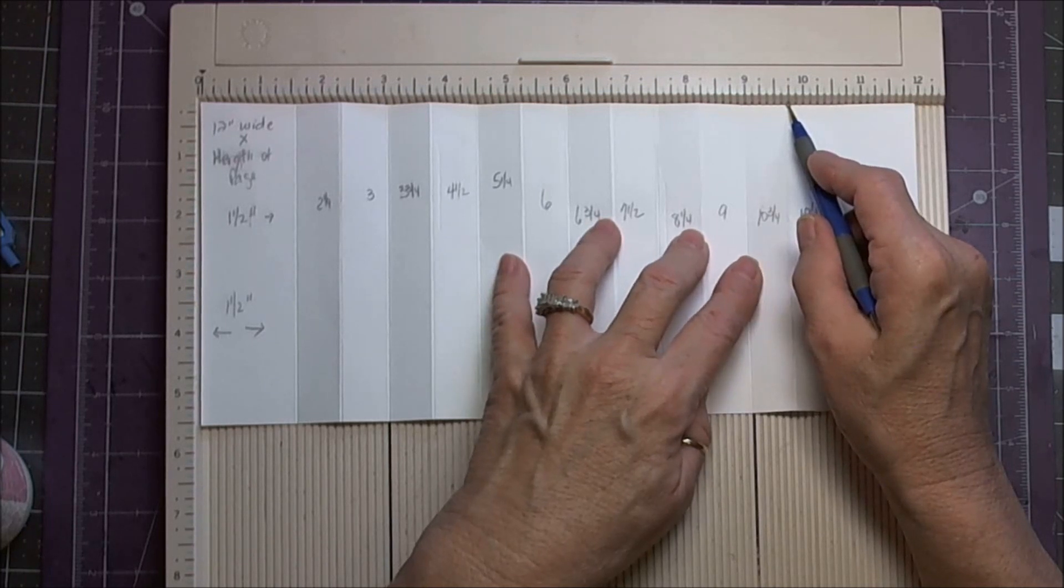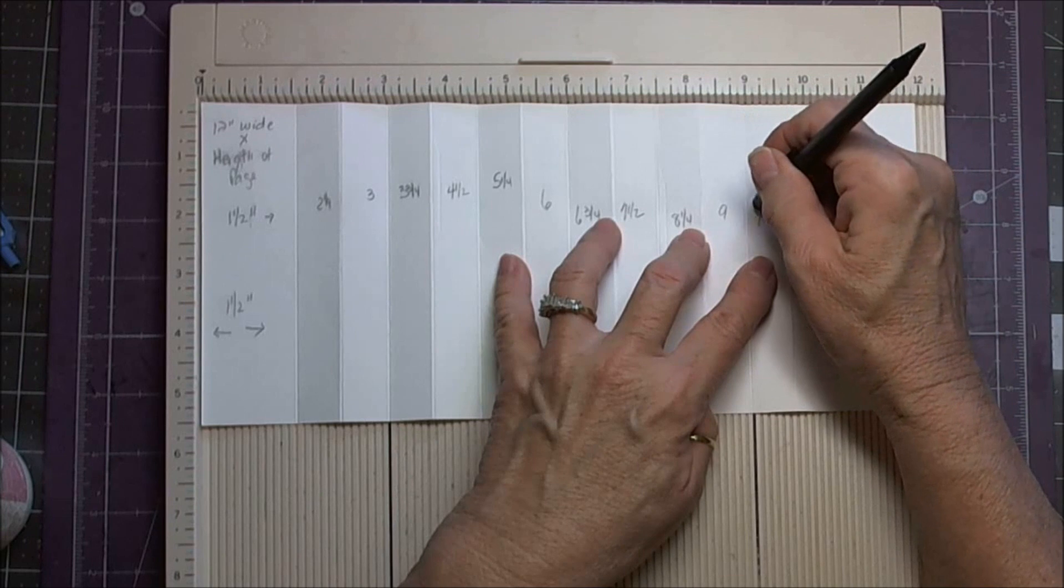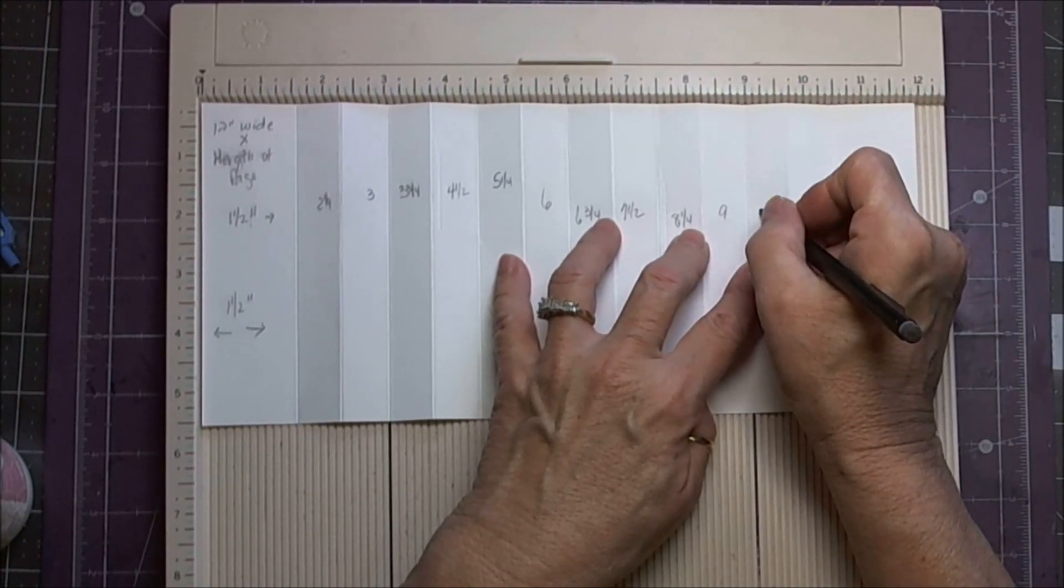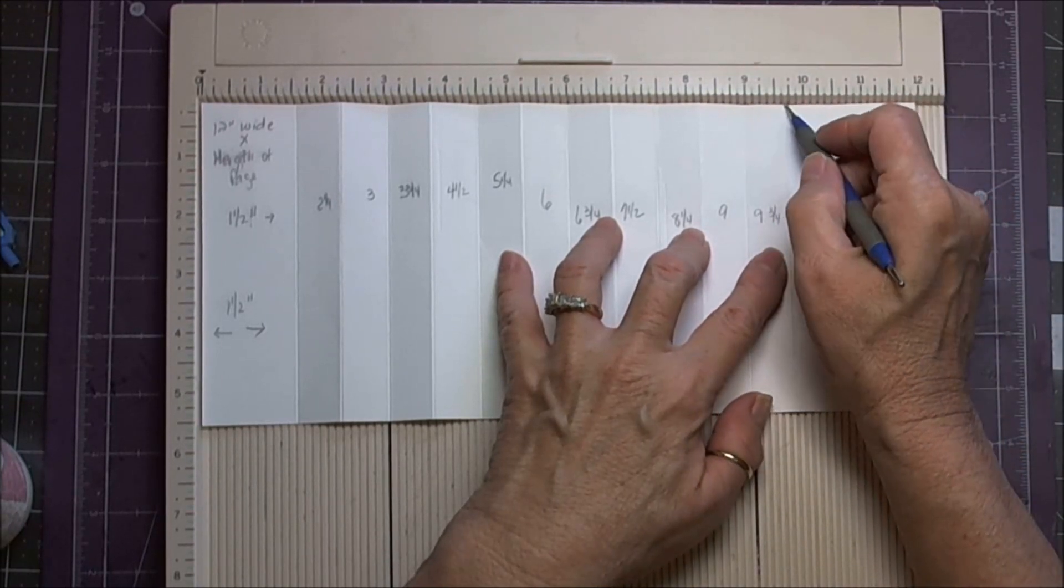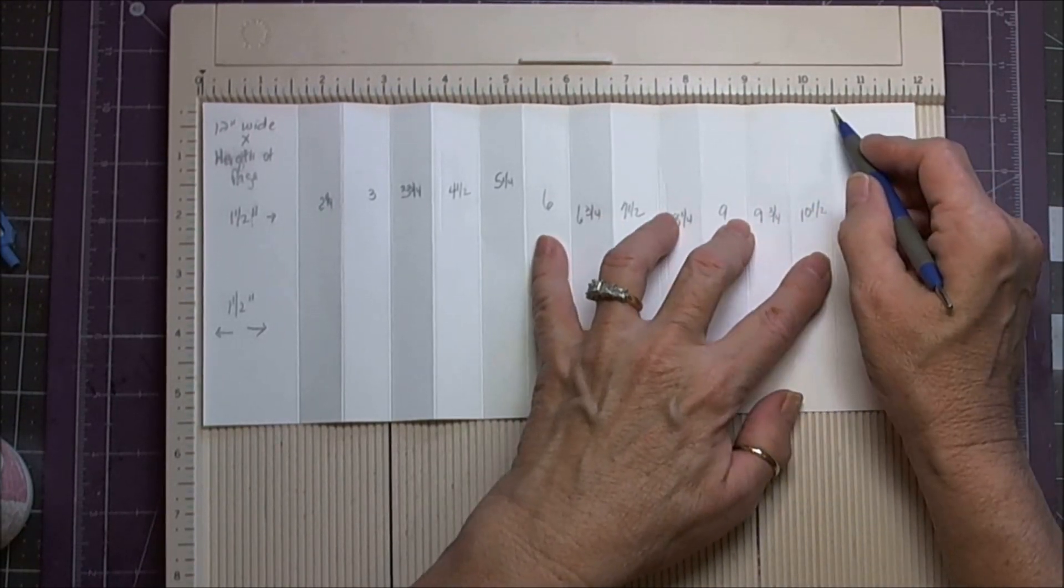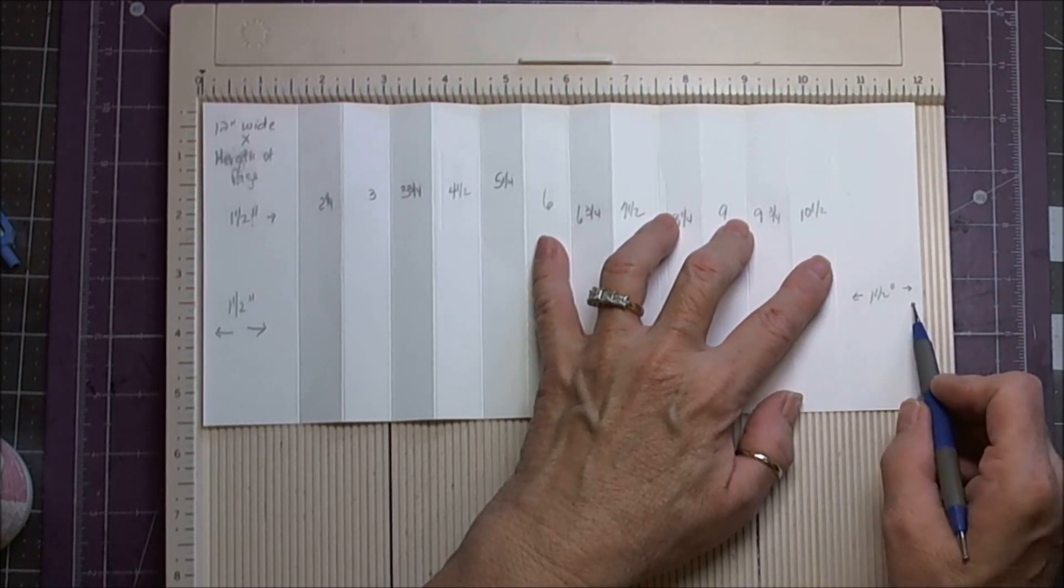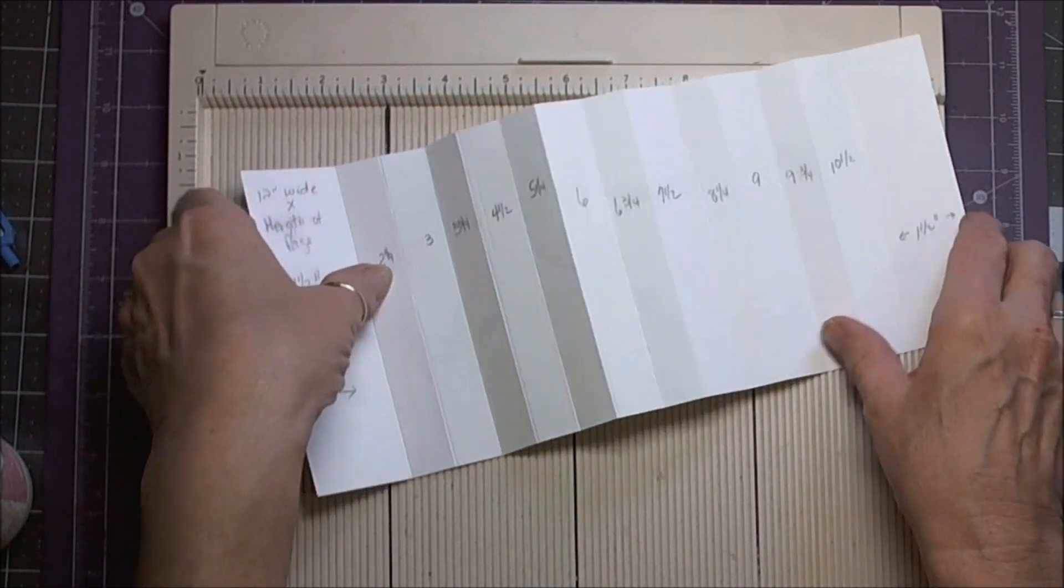Ten and, oops, is that, no, nine and three quarters. I'm sorry, I wrote that down wrong. This is nine and three quarters, and ten and one half. That will give you an inch and a half at the back, an inch and a half at the beginning. And you've got your basis.